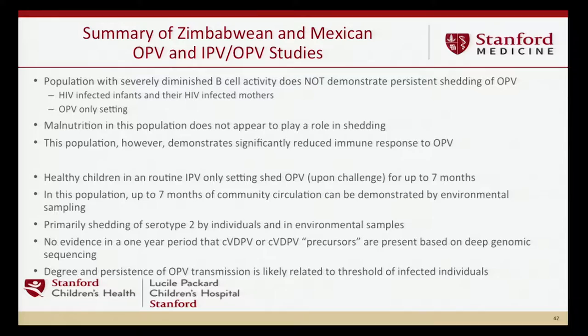Many governments are now trying to do environmental sampling to understand what they can detect, but we don't really know what a negative sewage sample means. We found in whole genome sequencing studies that over a one-year period we did not see any vaccine-derived poliovirus precursors or high-viral variants—that paper is in process. Finally, the degree and persistence of OPV transmission is likely related to the threshold number of susceptible and infected individuals in the population. We will be modeling that data further to understand those thresholds and how well we can detect virus in sewage to predict whether circulating virus needs to be addressed by additional campaigns.